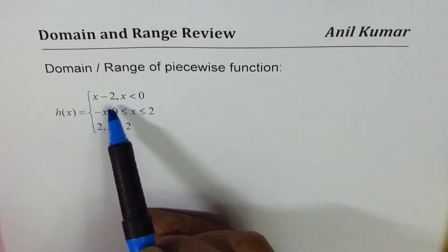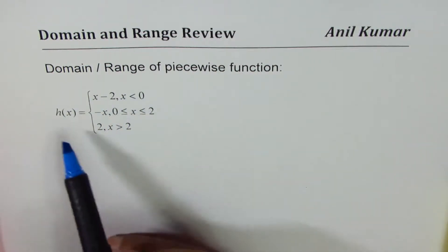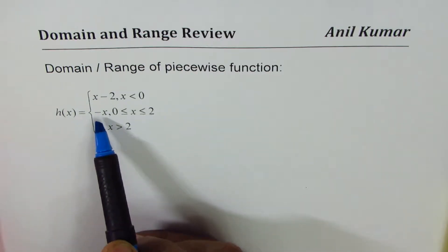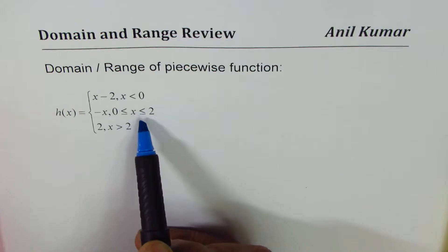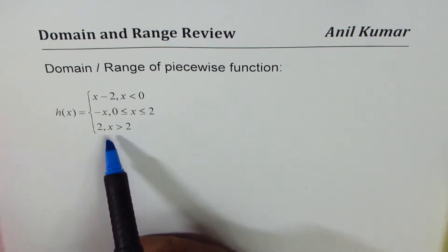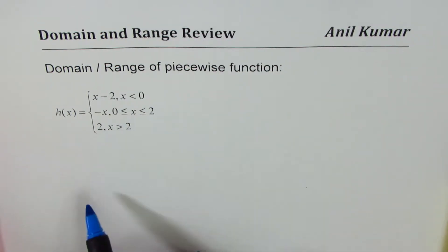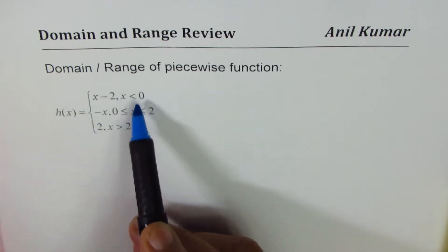We are given a function h(x) which is equal to x minus 2 for x less than 0, equal to minus x when x is greater than or equal to 0 and less than or equal to 2, and is equal to 2 for x greater than 2.